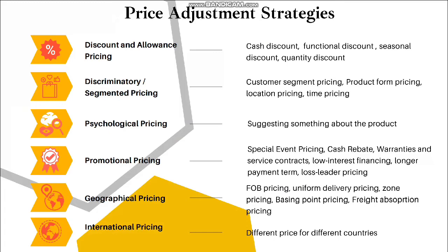The third is psychological pricing, which suggests something about the product. The fourth is promotional pricing. Examples include special event pricing, cash rebate, warranties and service contracts, low interest financing, longer payment terms, and loss leader pricing.